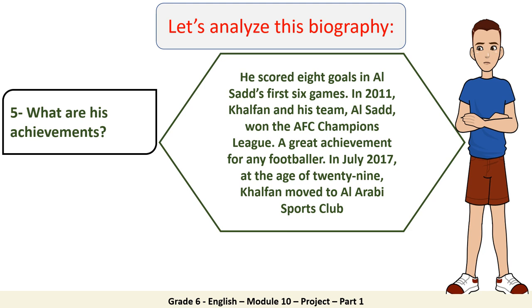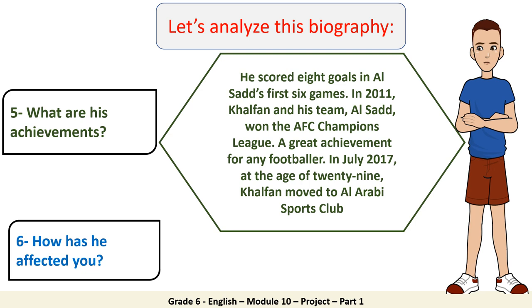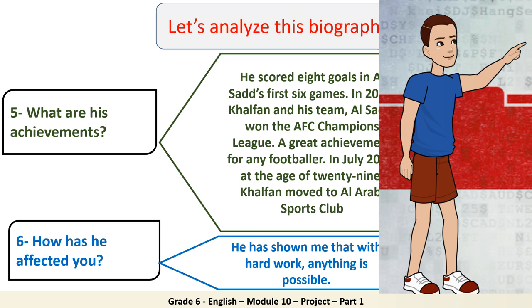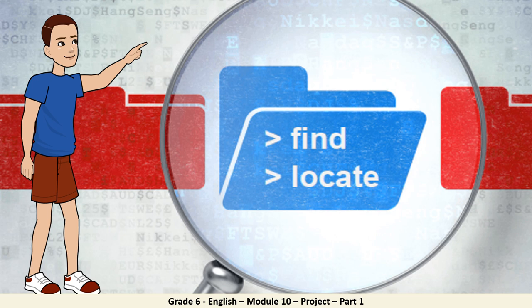To summarize his life story: his father was a famous footballer and Khalfan followed in his father's footsteps. He began his football career as a youth player for Al Arabi sports club, and in 2004 he started playing professionally for Al Saad. As for his achievements, he scored eight goals in Al Saad's first six games. In 2011, Khalfan and his team Al Saad won the AFC Champions League. In July 2017, at the age of 29, Khalfan moved to Al Arabi sports club. According to Khaled, Khalfan has shown him that with hard work, anything is possible. Now let's move to a different biography to help us prepare for our own writing in the next lesson.